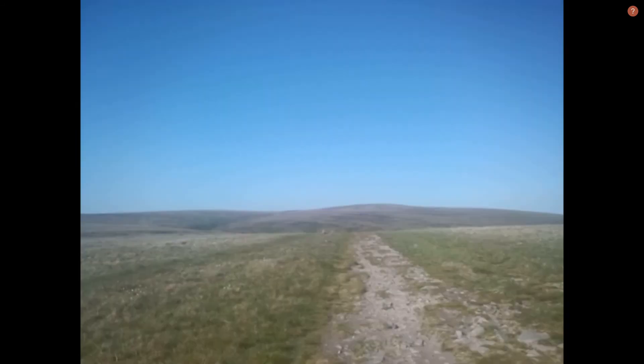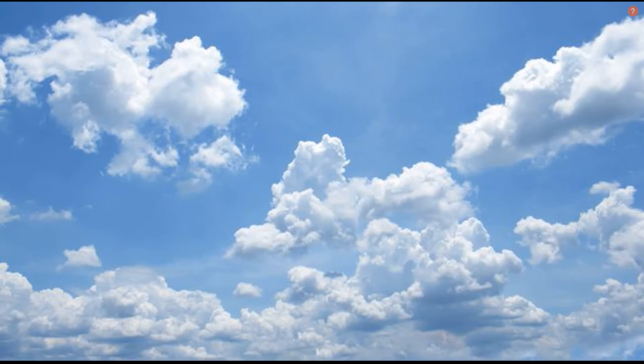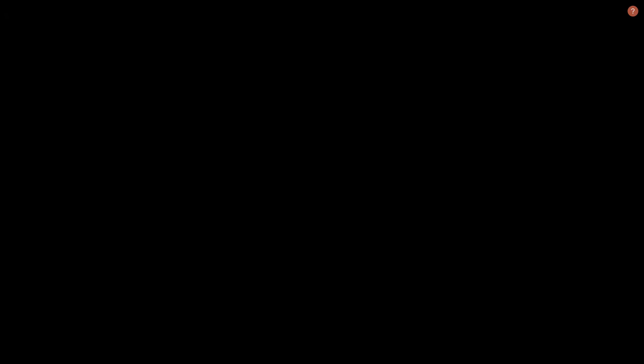A nice, hot, sunny day like today — there's not many clouds up in the sky. But those clouds get more and more water inside them. Where does that come from? Well, it comes from the ocean, from the ground. As it heats up from the sunlight, that causes evaporation of that water, and it rises into the sky and then condenses to form some of those little clouds up there behind me.